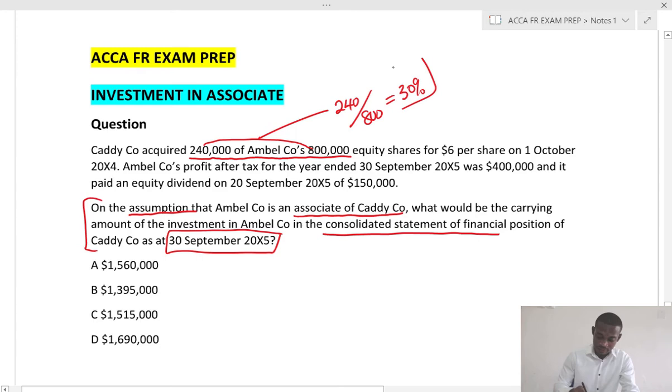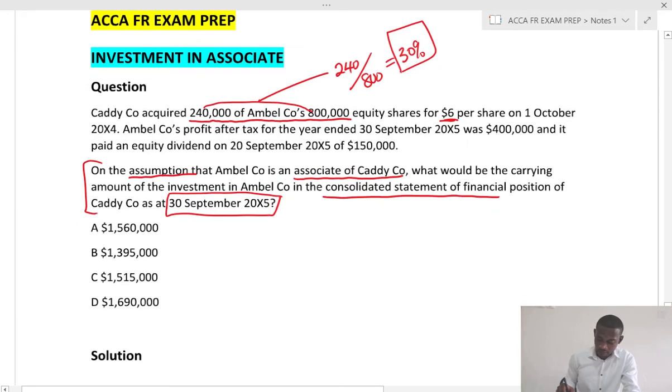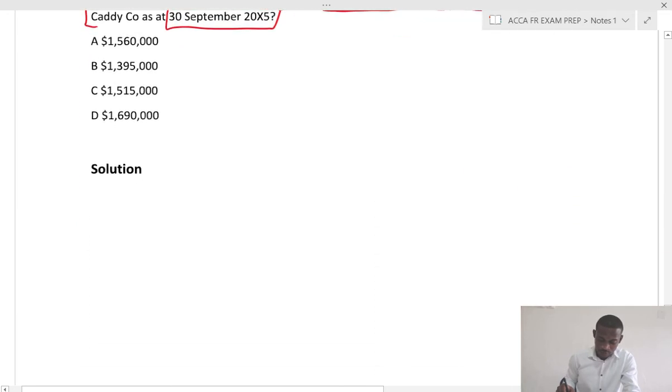Now let's continue. The acquisition of 240,000 equity shares for $6 per share on 1st October 20X4. Now what do you need to calculate the investment in associate? In terms of pro forma, the investment in associate should be the cost of investment.